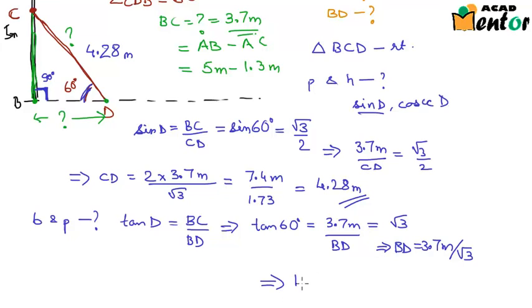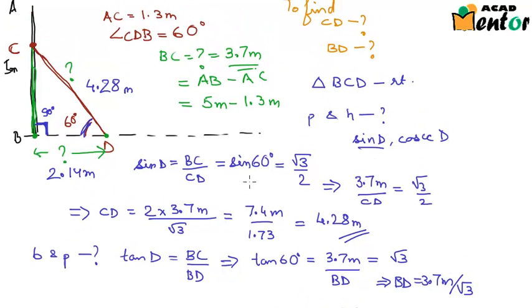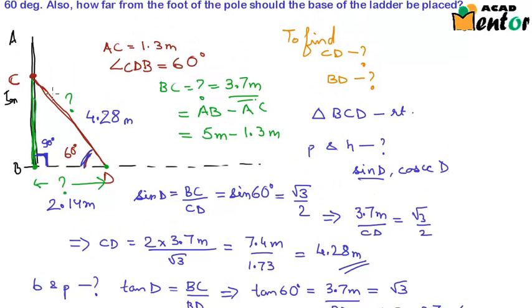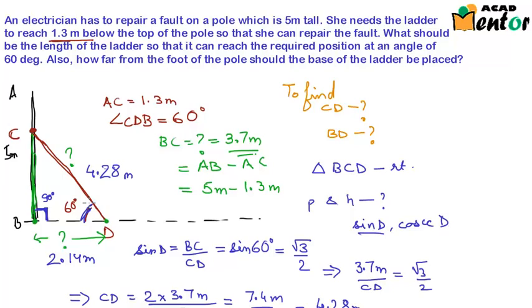So from this we can write BD as 3.7 meters by root 3, and root 3 is 1.73. So from here we get BD as 2.14 meters approximately. And hence we have solved the problem. In these types of problems the first step is to draw the figure and see where the right angle triangle is formed, then apply the required ratios and find out the distances.